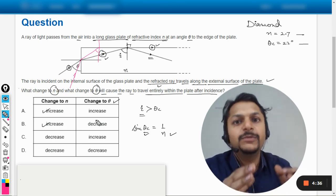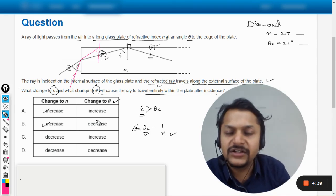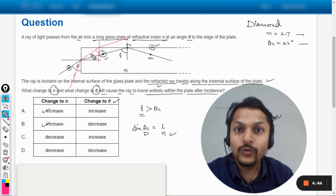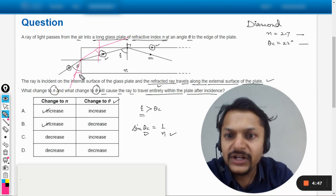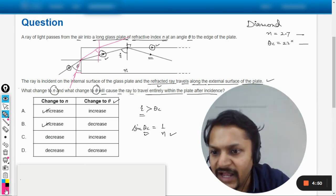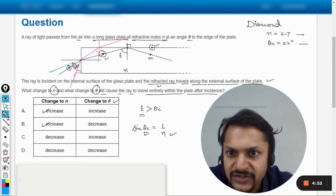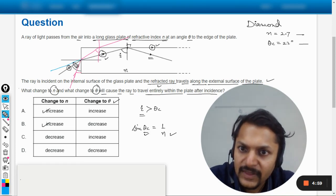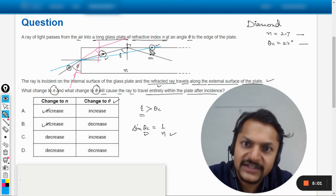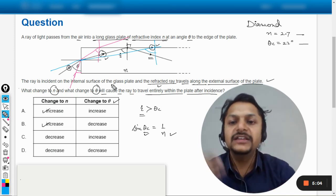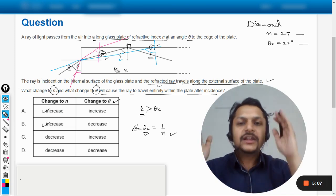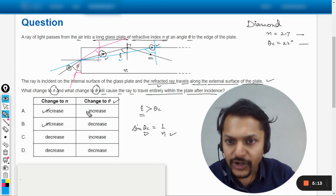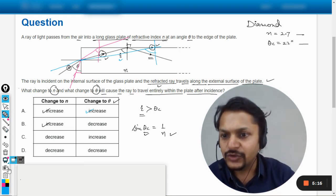So if it reduces and if it becomes equal to theta critical or something, or lesser than theta critical, the light will refract outside. But we do not want it, so it means that this theta should not be reduced. Even this should be increased. So what will happen if this is increased? You see, if this is increased here, let us say now the theta is increased like this, so it will go like this. So at this junction, this angle incidence i is bigger, is greater than this. So that is why definitely the TIR, the total internal reflection, would be taking place. So our answer is this increases as well as that increases, so the answer comes out to be A.